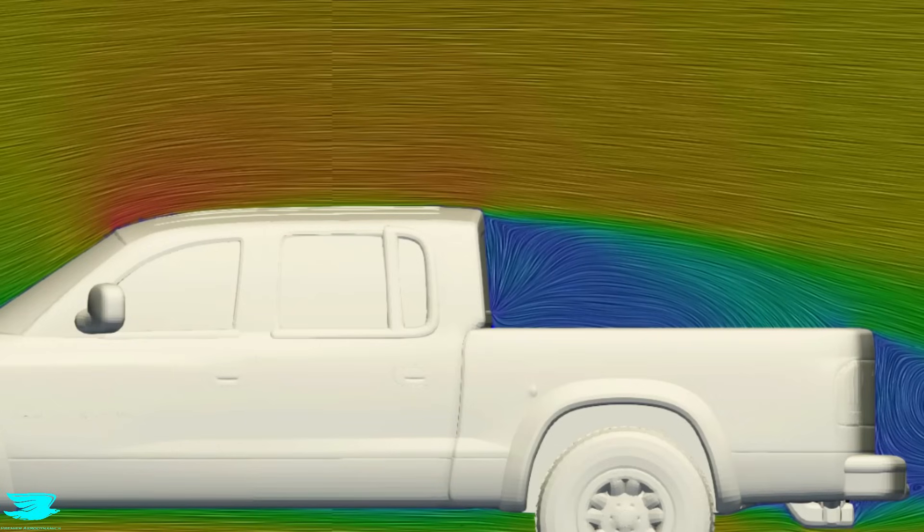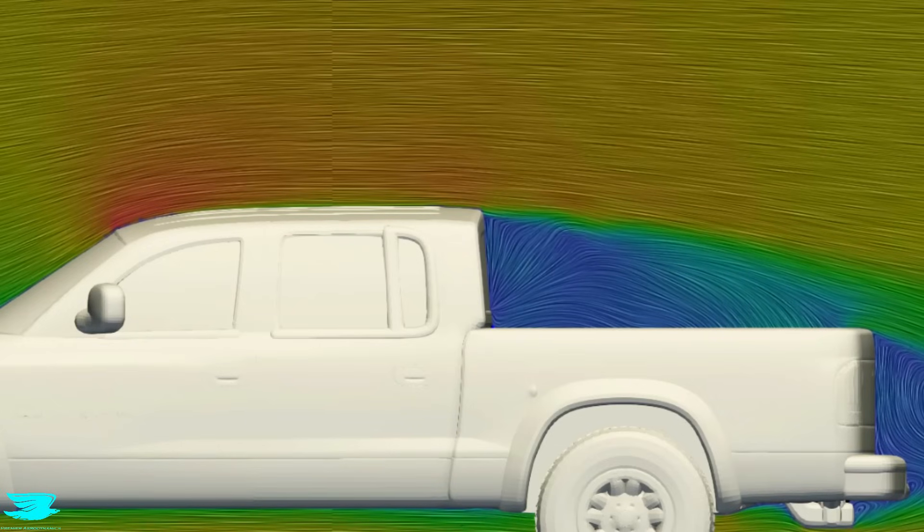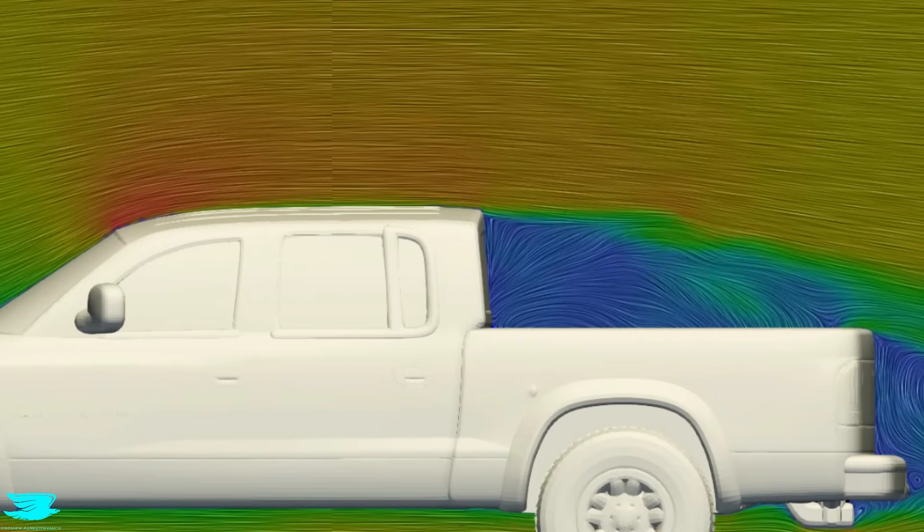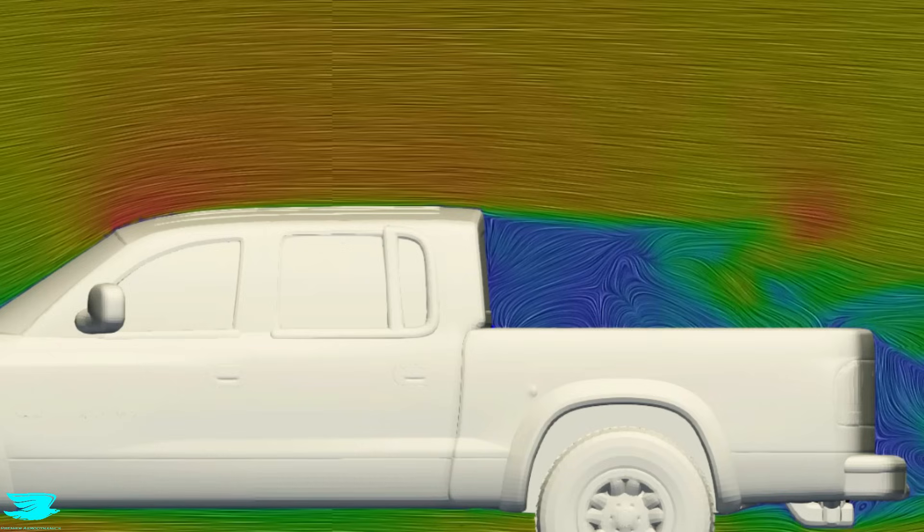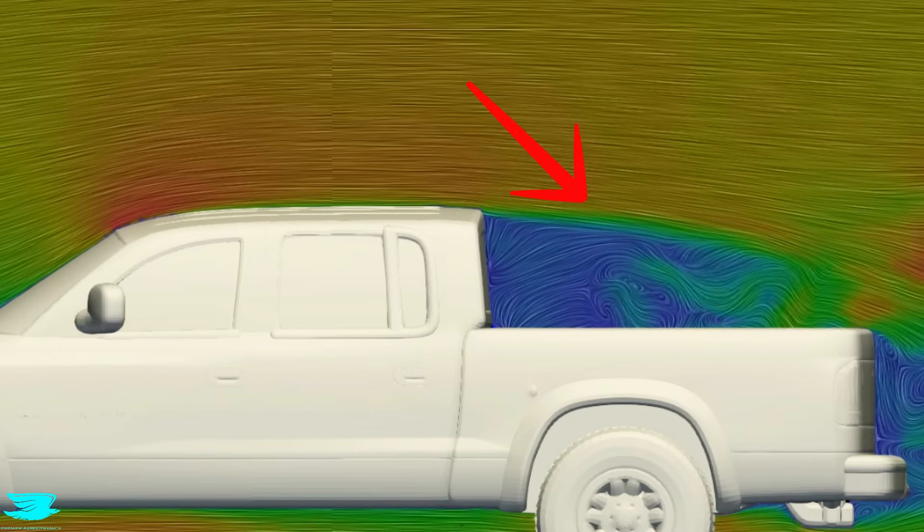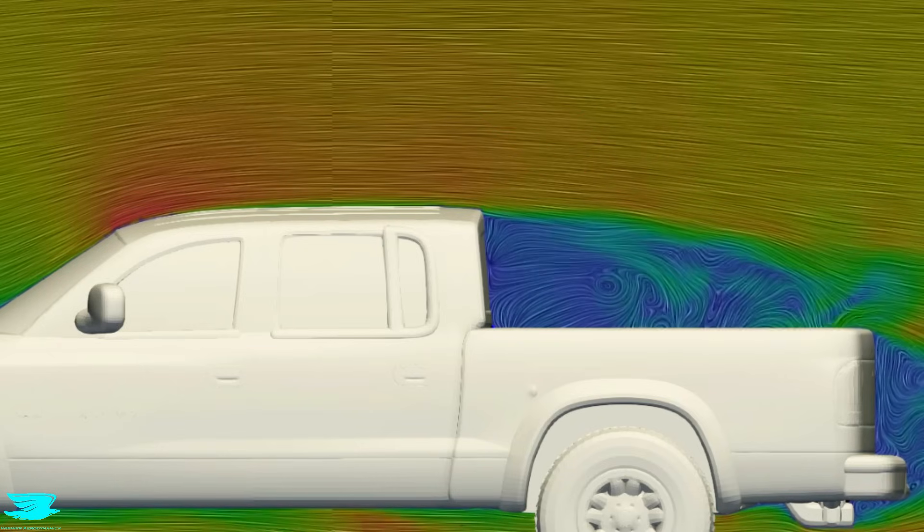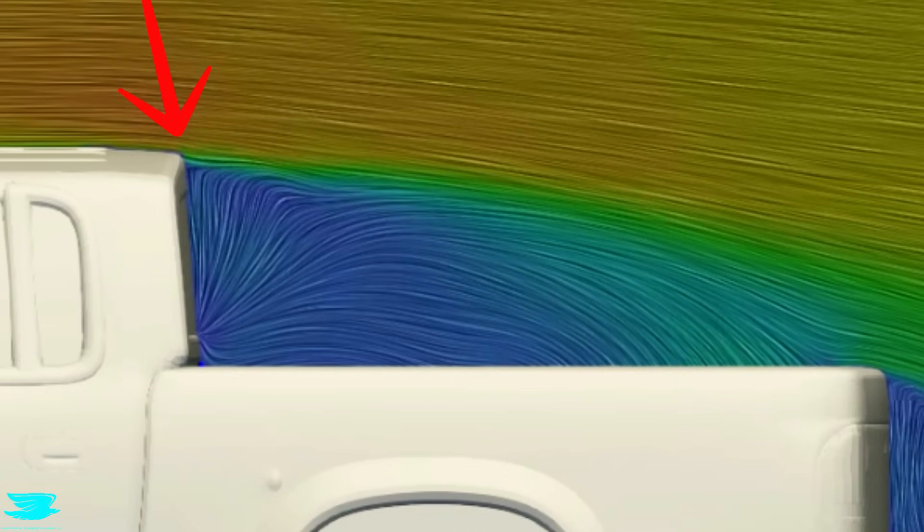But this roof is way more important than just its local effects. In fact, it's more important than almost any other type of car's roof. The reason is because it determines how the air is going to flow over the bed. In particular, the rear edge of the cabin affects that a lot.